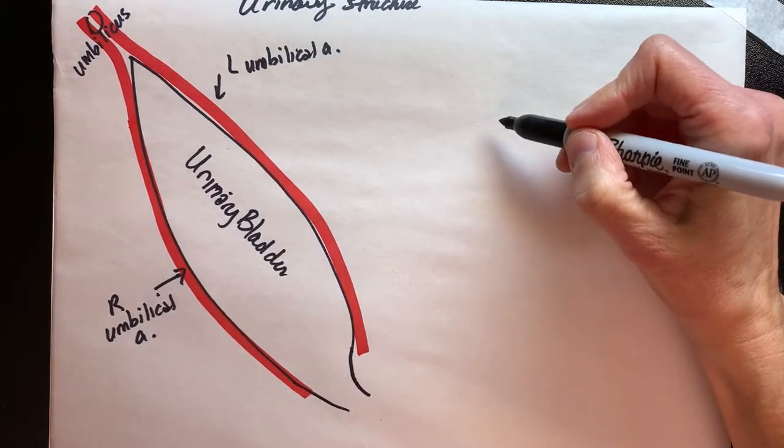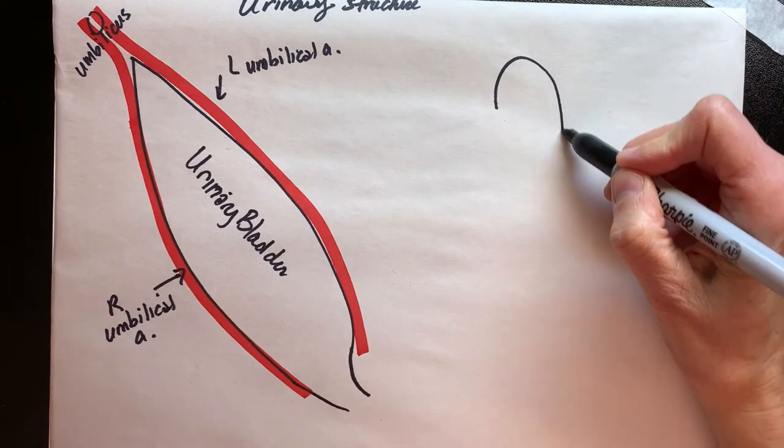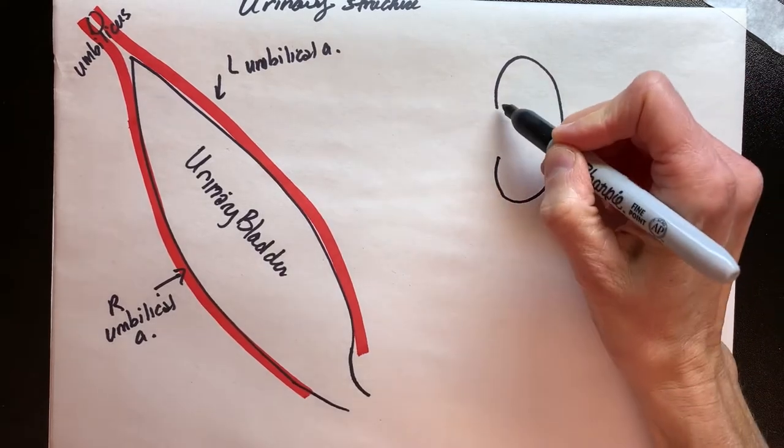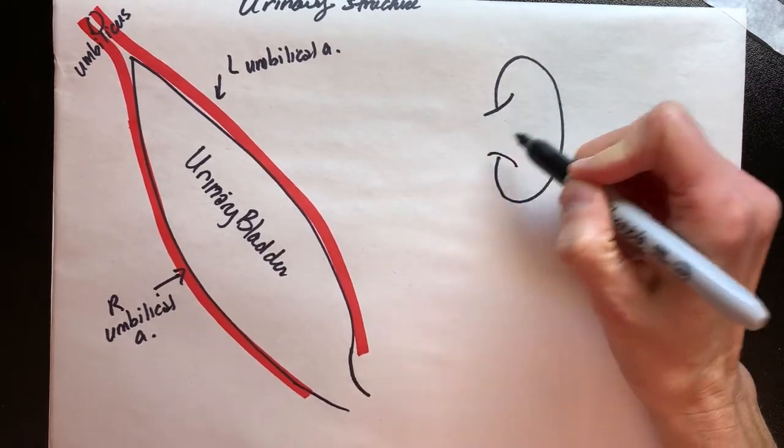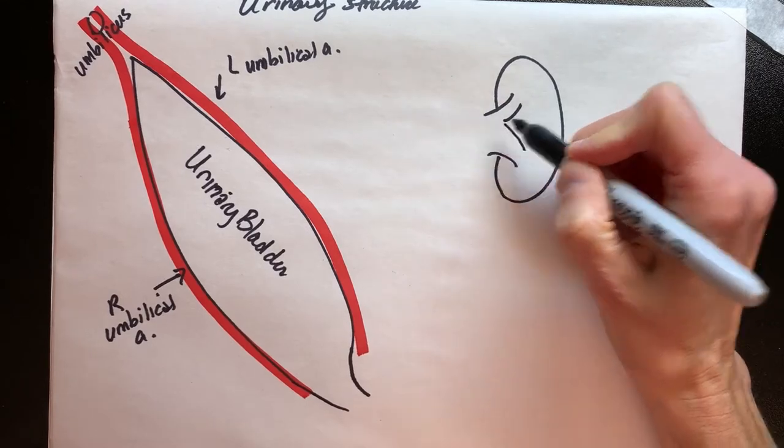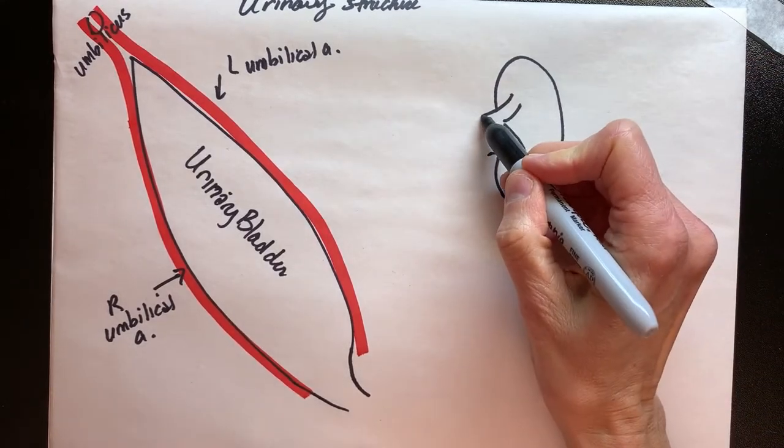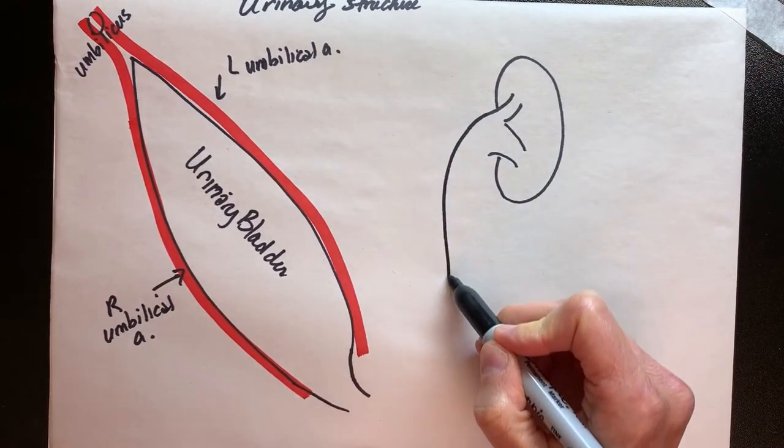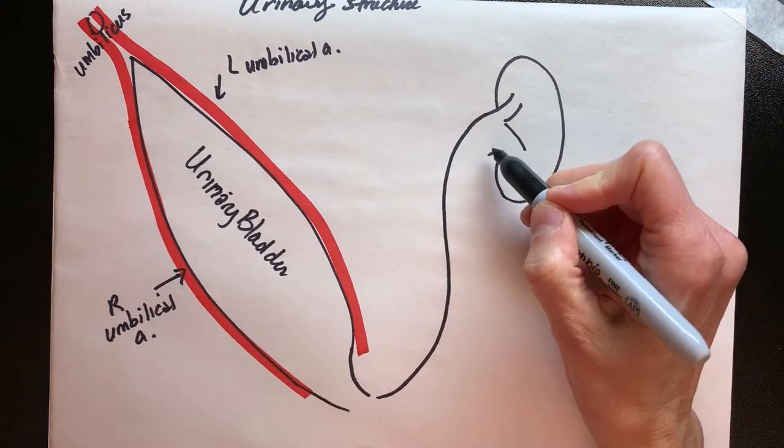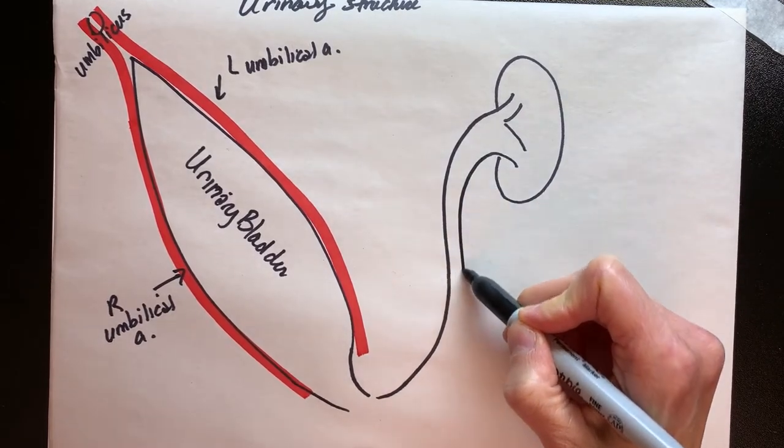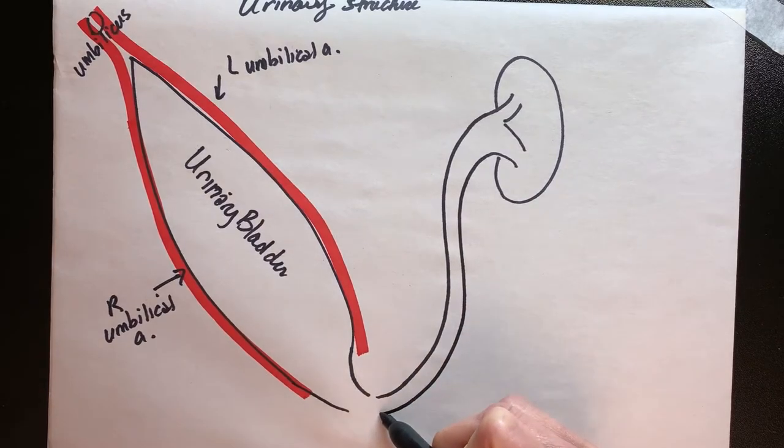Remember that retroperitoneally are kidneys. The kidneys have been dissected out at least on the left side of the pig so that you can see the kidney, and some of the kidneys have been left in the retroperitoneum on the right. It's just kind of interesting to see that.